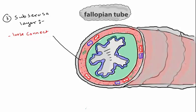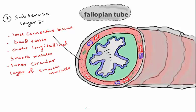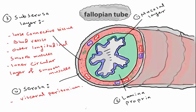The third layer is the subcerosa or muscularis layer, which contains loose connective tissue, blood vessels, lymphatics, and smooth muscle — specifically an outer longitudinal smooth muscle layer and an inner circular smooth muscle layer. The fourth and outermost layer is the serosa, derived from the visceral peritoneum. So the four layers are: mucosal, lamina propria, subcerosa/muscularis, and serosa.